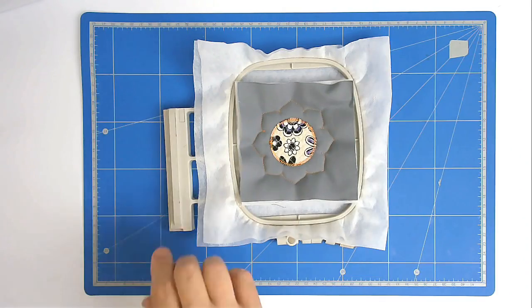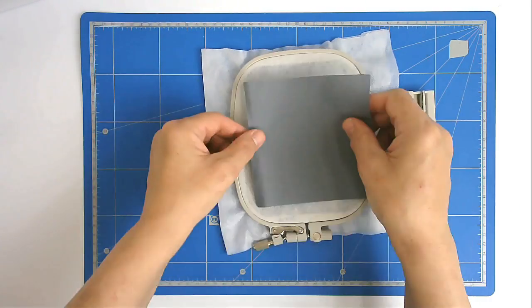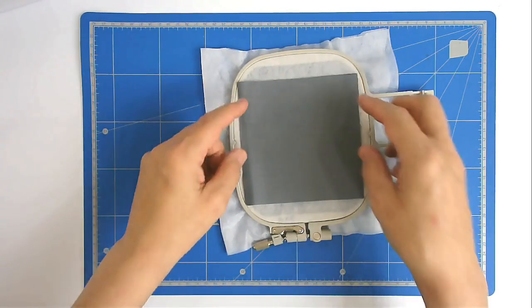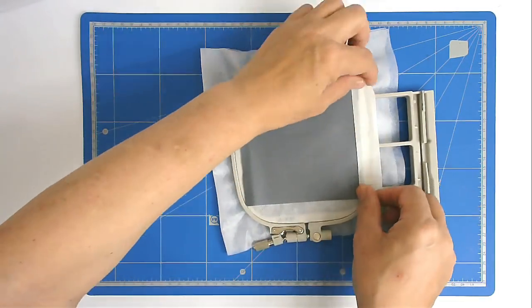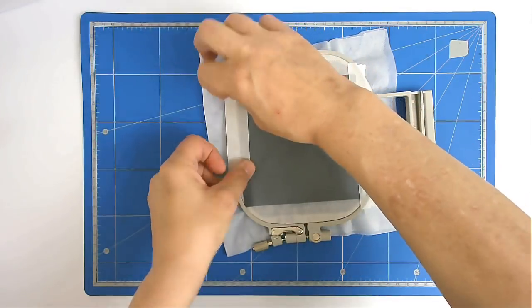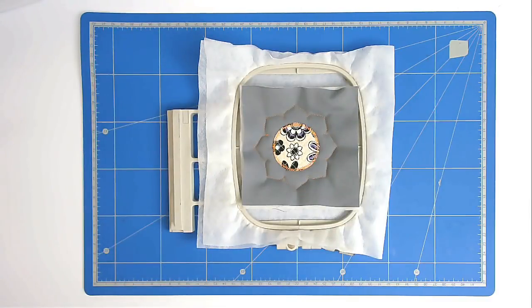It's now time to add our backing fabric, so we're going to turn our hoop over and place the backing fabric over the outline and tape it down securely. I'm now going to pop that back into my machine, and we're going to stitch round number six, and that's going to secure our backing fabric.